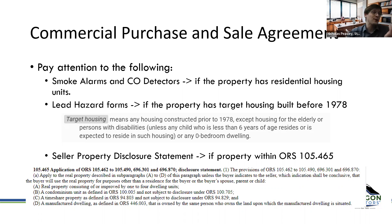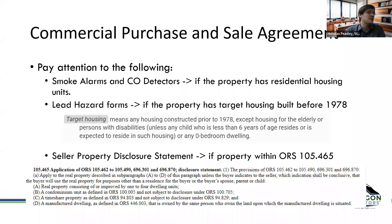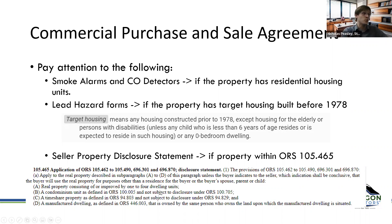Lead hazard disclosures apply if you have residential target housing constructed prior to 1978. So even if you're primarily buying a commercial building — like a gym with a studio apartment above — if that residential unit exists and the building is old enough, lead form disclosures are required because it is technically target housing. Similarly, a seller's property disclosure statement applies if the property is improved with one to four dwelling units. If it's purely commercial with no dwellings — a warehouse, mini storage, or similar — many of these additional disclosures won't apply.